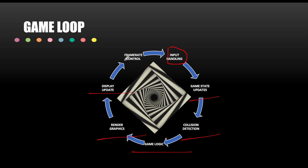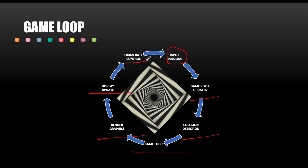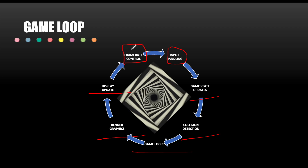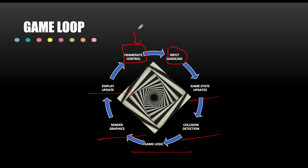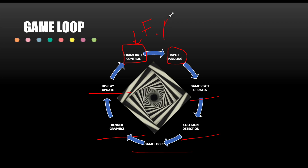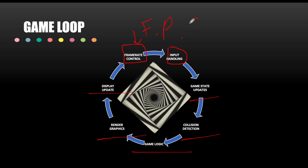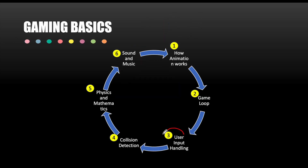Frame rate control is the same concept we discussed — frames per second — and that control is done inside the game loop. User input handling covers when the user is pressing some buttons, a joystick, the mouse, or keyboard buttons — all of this is handled with the help of user input handling.